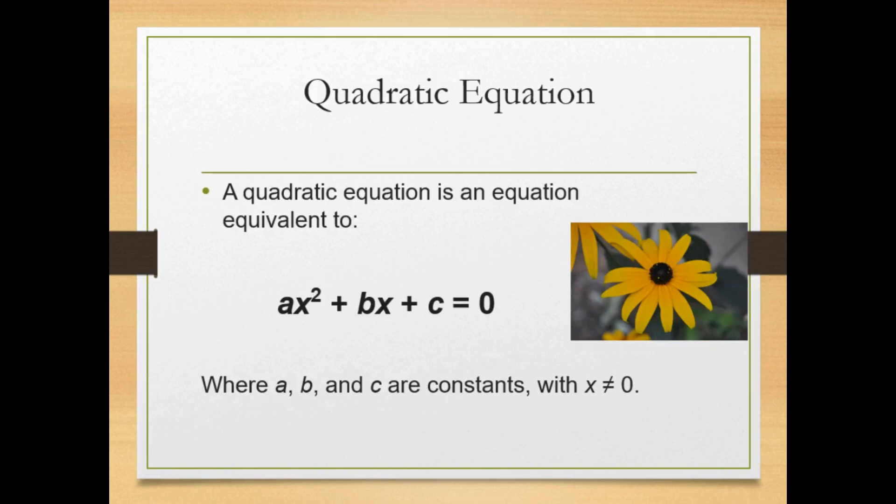Summarizing the preceding into a definition, we have that a quadratic equation is an equation equivalent to ax squared plus bx plus c equals 0, where a, b, and c are constants with a not equal to 0.